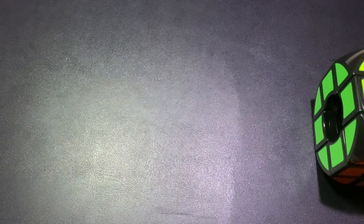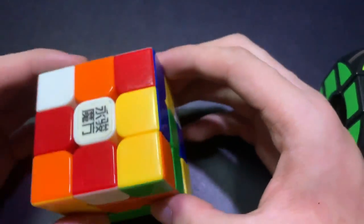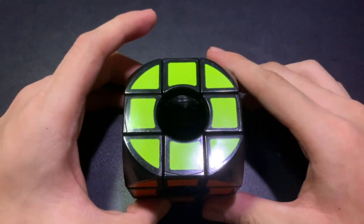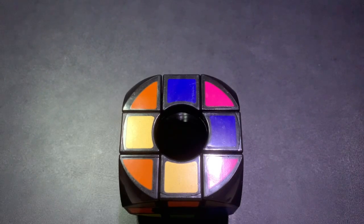So now, just like any other scrambled 3x3, the first thing we have to do is to solve the white cross. So let's go ahead and scramble this cube. So now that it's scrambled, let's go ahead.